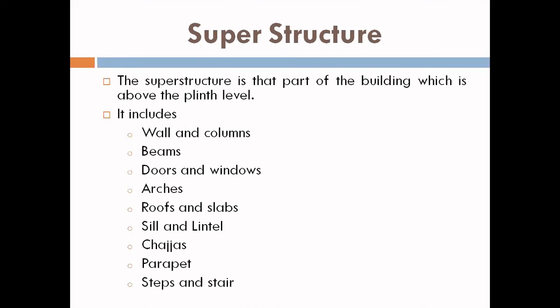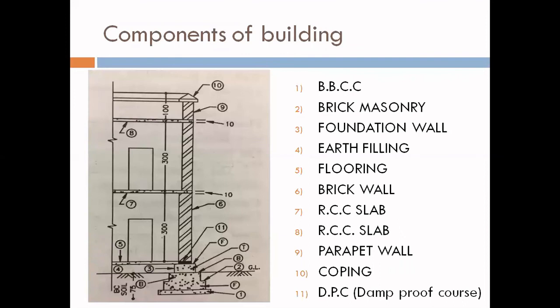This slide shows the components of the building. In this image, parts are shown numbered from 1 to 11. Number one is BBCC — brick bed cement concrete. Number two is brick masonry, which is the second part of the foundation.